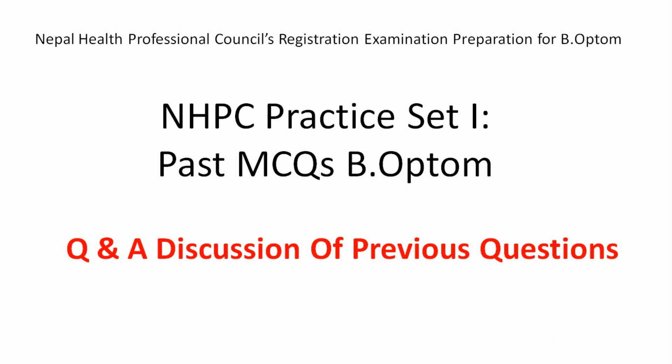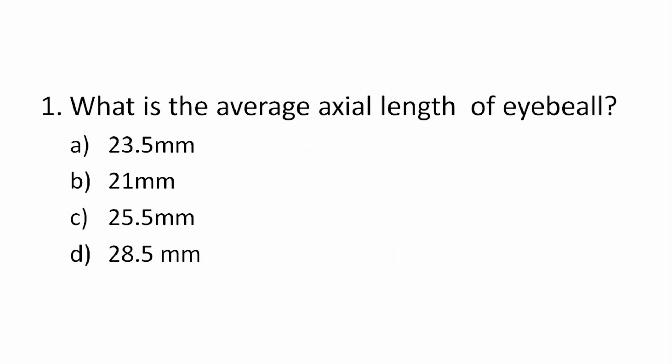Namaste. We will be discussing MCQs and their answers based on past questions of optometry in NHPC examination. First question: What is the average axial length of the eyeball? A) 23.5mm, B) 21mm, C) 25.5mm, D) 28.5mm. The answer is 23.5mm — that is the normal average axial length of the eyeball.